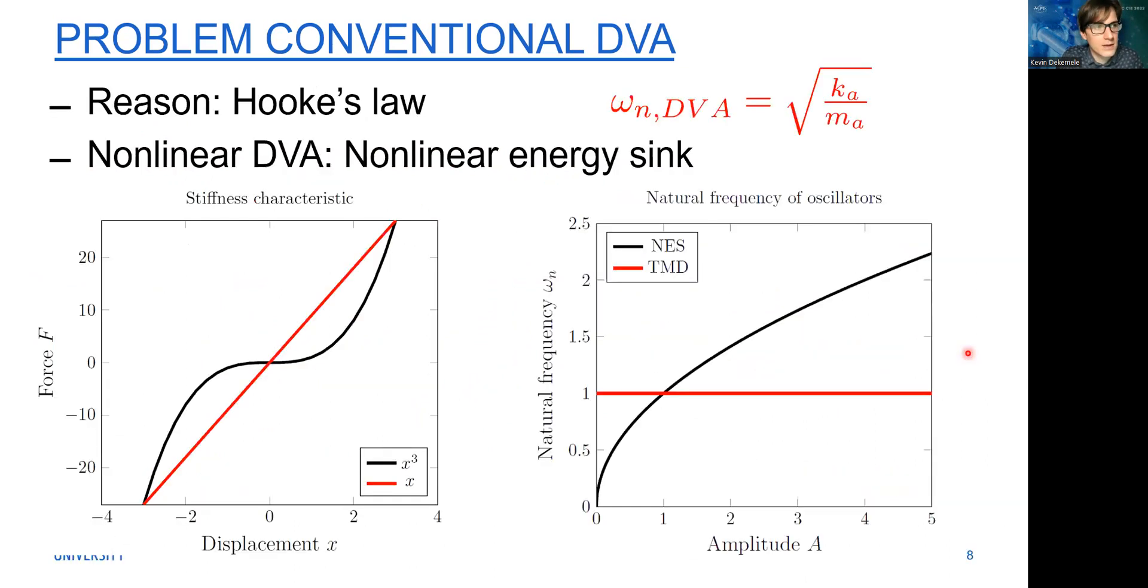The reason why this conventional DVA has these drawbacks is because it follows Hooke's law, which means the displacement and the force of the spring characteristic is linear. What happens if you don't follow this law? For instance, we have this cubic relation. What we then have is that the natural frequency shown in black is not constant, so it can self-tune, self-adapt to other or shifting frequencies.